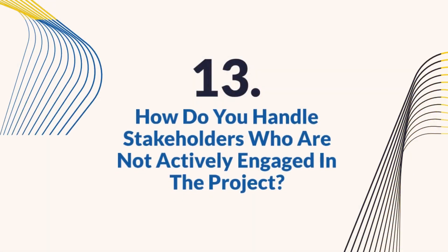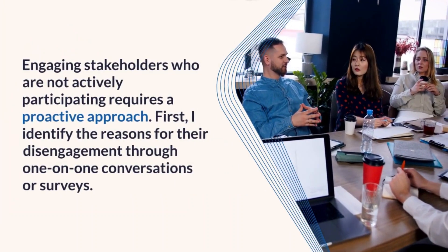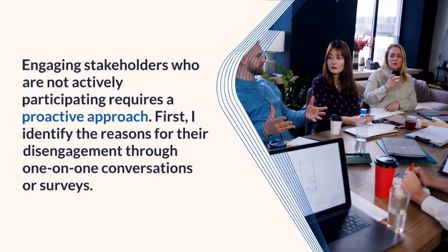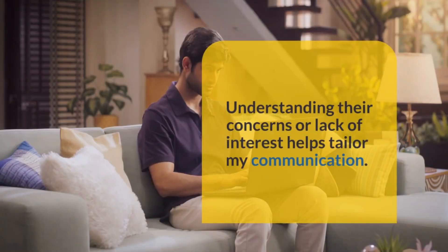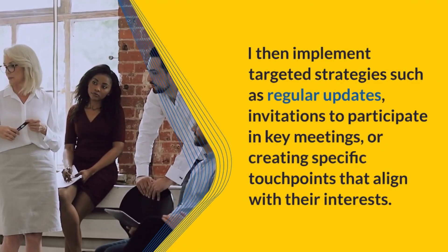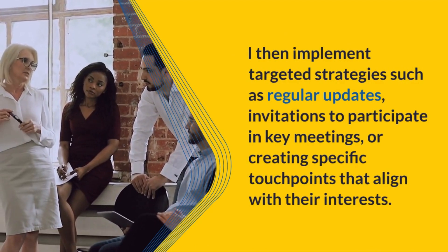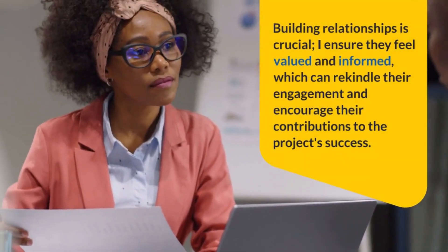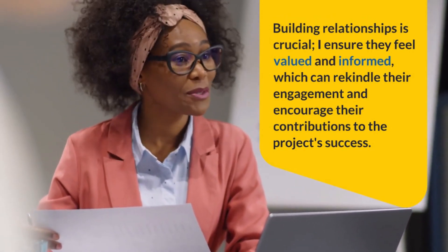Question 13: How do you handle stakeholders who are not actively engaged in the project? Engaging stakeholders who are not actively participating requires a proactive approach. First, I identify the reasons for their disengagement through one-on-one conversations or surveys. Understanding their concerns or lack of interest helps tailor my communication. I then implement targeted strategies such as regular updates, invitations to participate in key meetings, or creating specific touchpoints that align with their interests. Building relationships is crucial — I ensure they feel valued and informed, which can rekindle their engagement and encourage their contributions to the project's success.